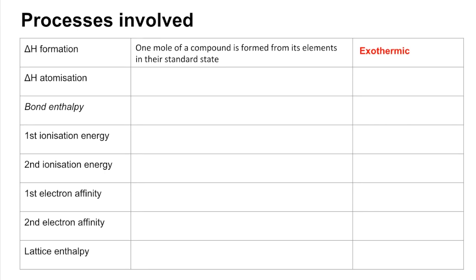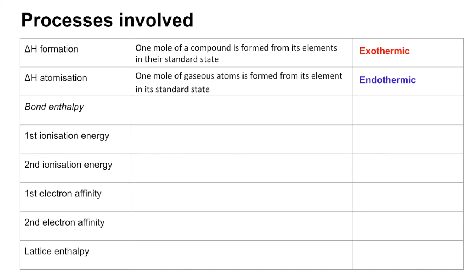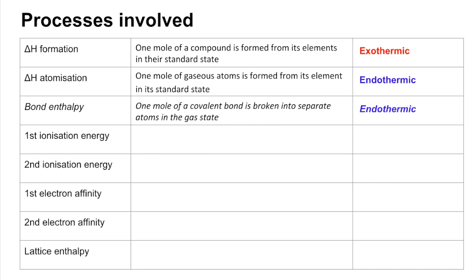Enthalpy change of atomization is the enthalpy change when one mole of gaseous atoms is formed from its element in its standard state. That is an endothermic process — energy needs to be supplied. Bond enthalpy is also included because OCR have used it a couple of times instead of atomization; that's the energy required to break one mole of a covalent bond into separate gaseous atoms. Also endothermic.